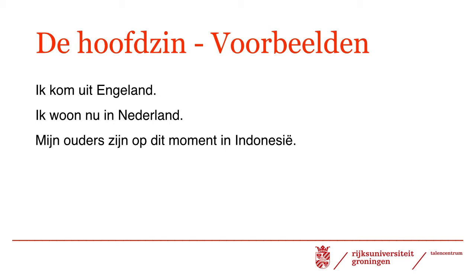Ik kom uit Engeland. Ik woon nu in Nederland. Mijn ouders zijn op dit moment in Indonesië. Meaning: I am from England. Now I live in the Netherlands. My parents are in Indonesia at the moment. Please note that the conjugated part of the verb is in the second position — this is a general rule. In these first three sentences, the subject is in the first position. The structure is: subject, verb, the rest.